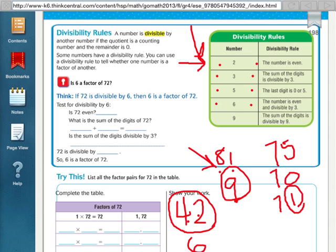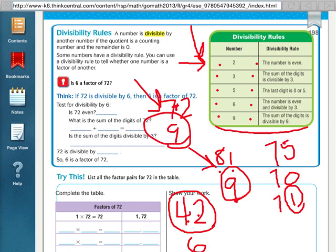And then 9, if they're asking if 9 is a factor of something, here's the rule. The sum of the digits is divisible by 9. So, for example, if they had 72, the sum of the digits, so 7 plus 2 is 9. And 9 is divisible by 9. So, 9 is a factor of 72. Remembering these rules would be very helpful when you're asked if a number is a factor of another number.